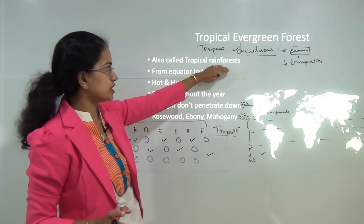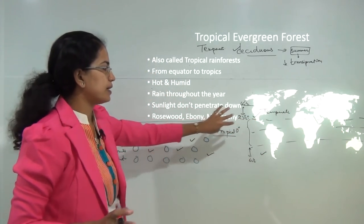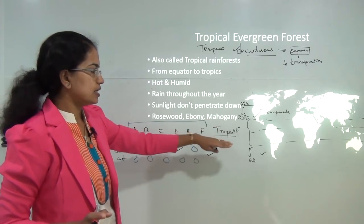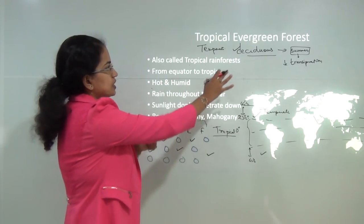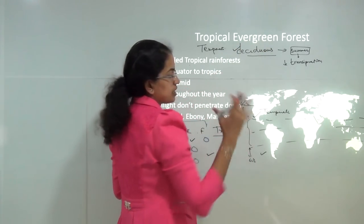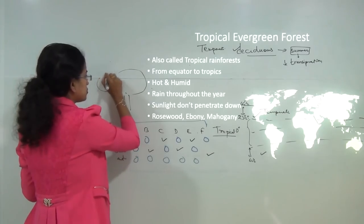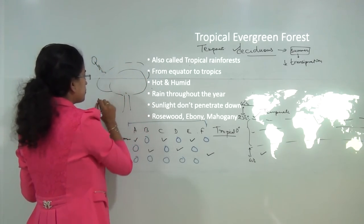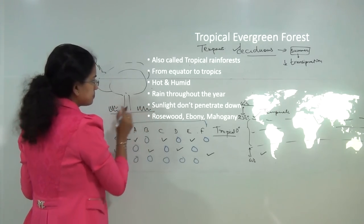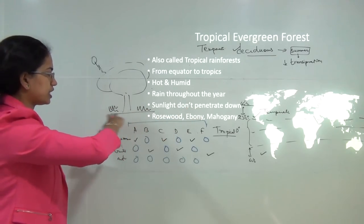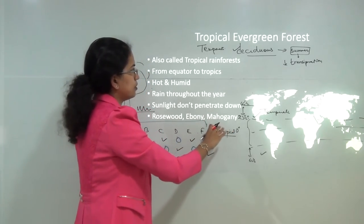Tropical evergreen forests are also known as rainforests. They are commonly seen in the hot and humid belt near the tropical area where rain occurs throughout the year. Since this is evergreen vegetation, the trees are so dense that sunlight cannot penetrate down to the lower strata of the vegetation. Common trees seen here are rosewood, ebony and mahogany.